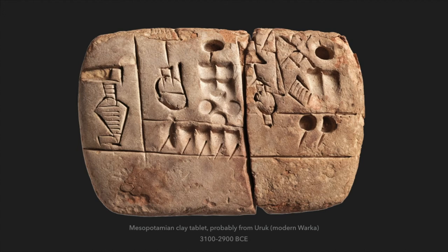Around the same time, and maybe even a little bit earlier, Mesopotamia was also developing their written language. Their first language was Sumerian, and they also used pictures as symbols, same as Egypt did. Each symbol would be a basic noun or adjective, with very little grammar. One example shows economic information - how much grain was produced by a very large temple nearby.